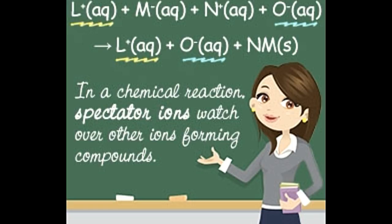Since K⁺ and NO₃⁻ remain unaltered during and after the equation, they can be eliminated from the net ionic equation. The final net ionic equation after elimination of the spectator ions yields water: H⁺ (aq) + OH⁻ (aq) → H₂O (l). The spectator ions in KOH (aq) and HNO₃ (aq) are K⁺ (aq) and NO₃⁻ (aq).